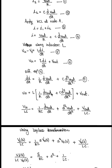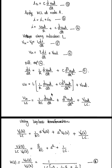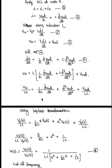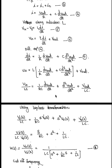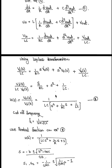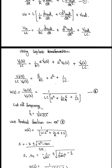After simplifying this equation we get a double differential equation. This is our double differential equation of our parallel RLC circuit. We can use Laplace transformation on this equation, and we will get our transfer function in the form of H(s).